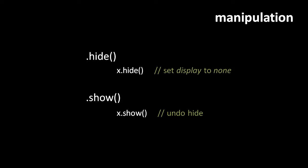A very common task is hiding or showing elements on a page. You could manually set the CSS display property to none to hide and then restore it to block or inline to show, but you'd have to remember each element's correct display value. jQuery's hide and show methods handle this automatically — hide sets display to none, and show restores the display value to whatever it's supposed to be, making these much more convenient than manipulating the display property manually.